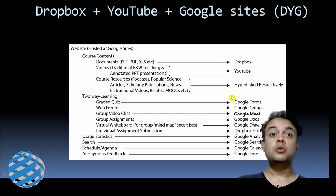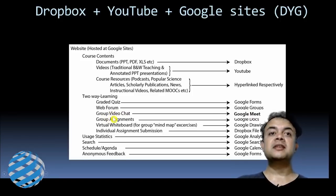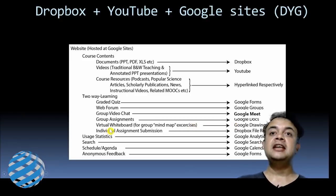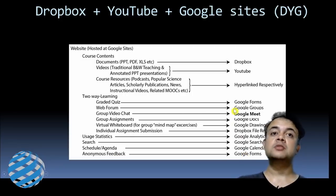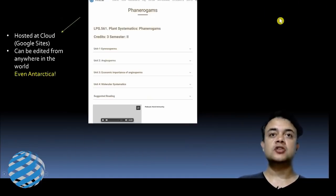The DYG solution fosters two-way learning because it includes: graded quizzes through Google Forms, a web forum through Google Groups, group video chat via Google Meet, group assignments through Google Docs, a virtual whiteboard for mind map exercises via Google Drawings, individual assignment submission by Dropbox file request, usage statistics via Google Analytics, a search function by Google Search, a schedule via Google Calendar, and anonymous feedback again through Google Forms.